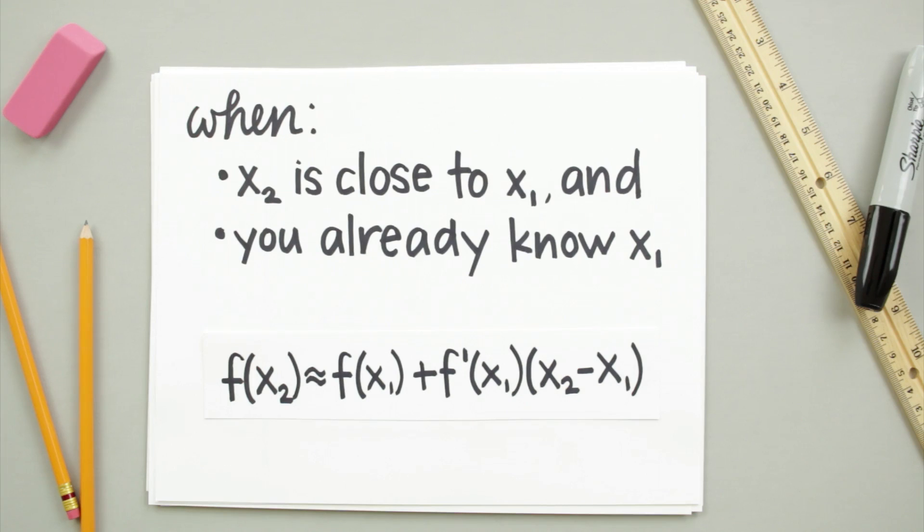And again, this formula comes directly from the point-slope formula for the equation of a line, so if we can remember that formula, this one should be pretty easy to remember too.